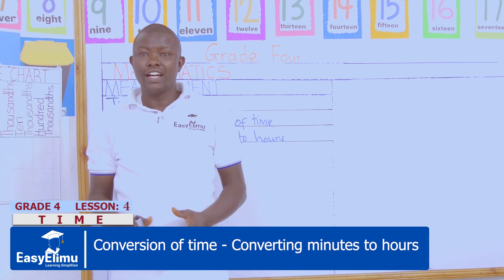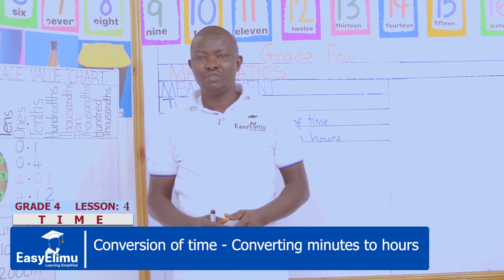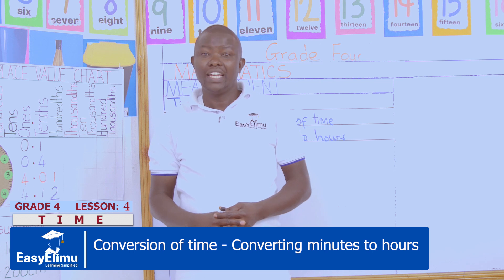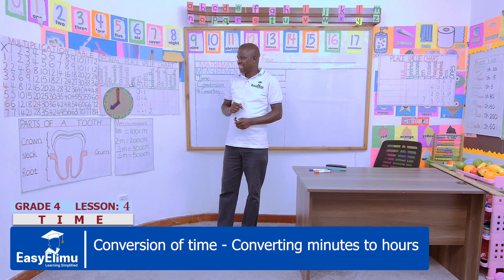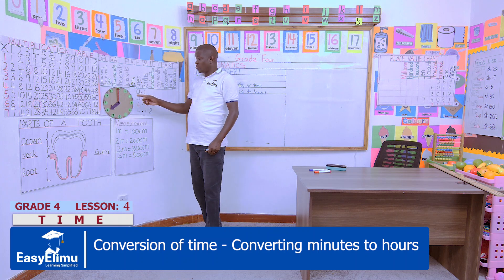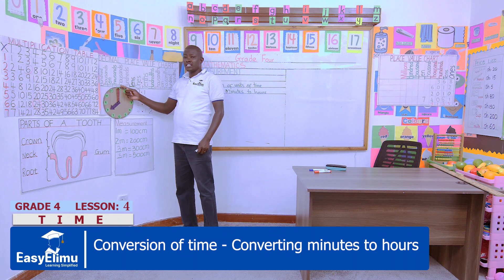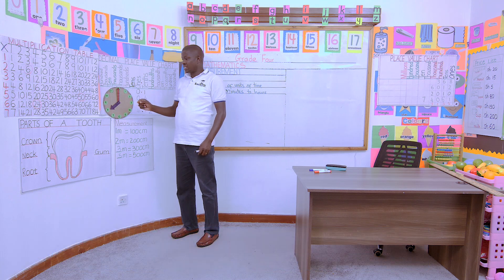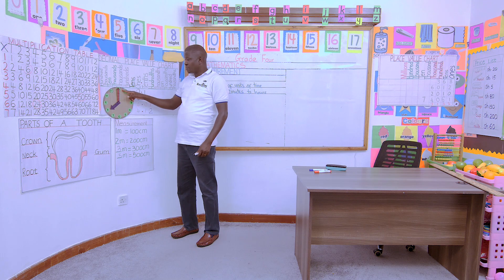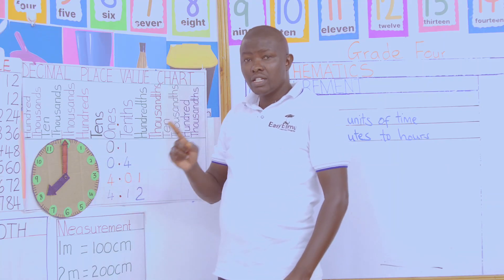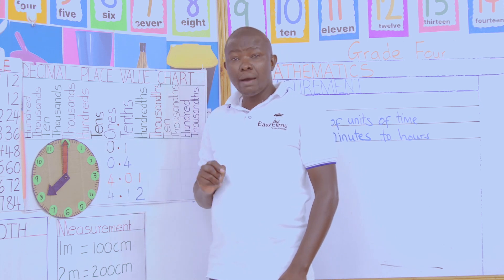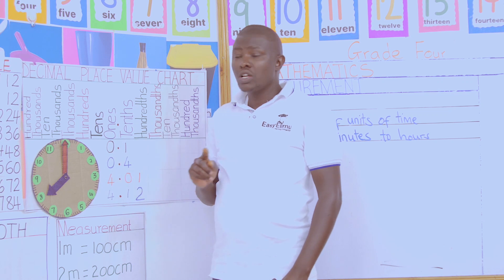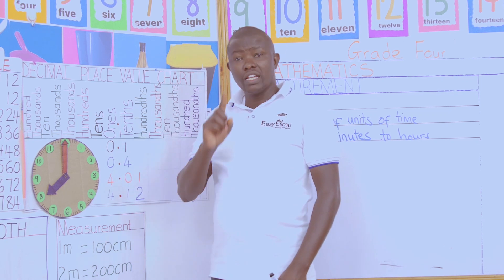How do we tell time? In our previous lesson we learned how to convert hours to minutes. Using the clock face, we said the longer hand is the minute hand and the shorter hand is the hour hand. Our clock face has small subdivisions, and each subdivision stands for one minute. As you count them, they are 60 in number, so 60 minutes are equivalent to one hour.